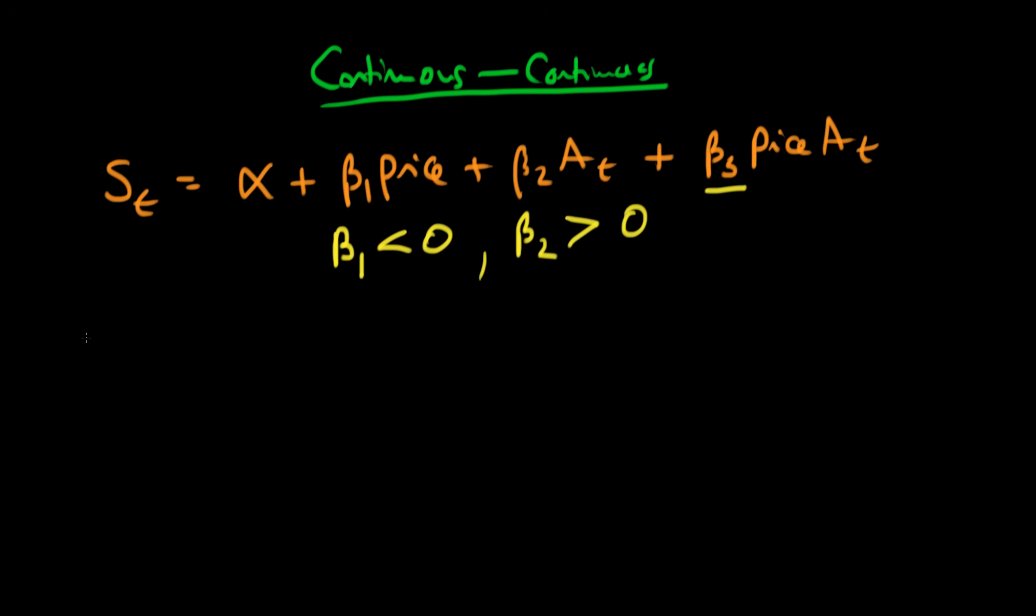Well, let's think about this in two different situations. So let's say that the company was spending a hundred thousand on advertising and let's think about what the company's expected sales would be under that situation. Well, the idea is that the company's level of sales we would expect if advertising was 100 would be equal to alpha plus beta 1 times the price, plus now we're going to get 100 beta 2 for this third term, and then we're going to get plus 100 beta 3 times the price.